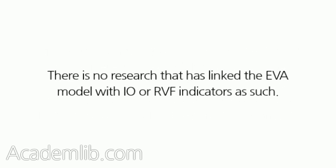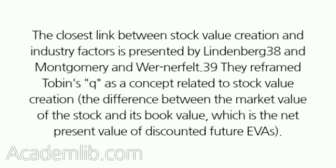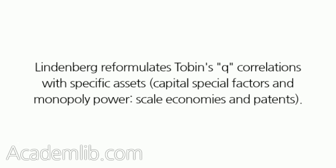There is no research that has linked the EVA model with IO or RBV indicators as such. The closest link between stock value creation and industry factors is presented by Lindenburg and Montgomery and Werner Felt. They reframed Tobin's Q as a concept related to stock value creation — the difference between the market value of the stock and its book value, which is the net present value of discounted future EVAs. Lindenburg re-formulates Tobin's Q correlations with specific assets, capital special factors and monopoly power, scale economies, and patents.